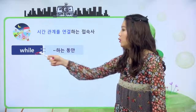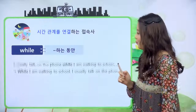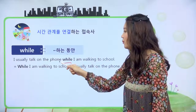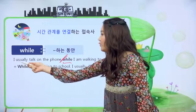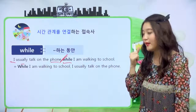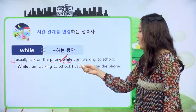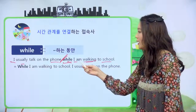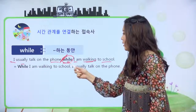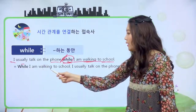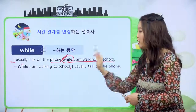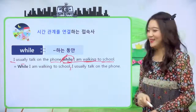몇 가지 더 볼게요. while은 뭐뭐 하는 동안 이라고 해석이 돼요. 예문 보면 I usually talk on the phone while I'm walking to school. 나는 보통 학교에 걸어가는 동안 통화를 한다라는 거예요. 순서를 바꾸면 While I'm walking to school, I usually talk on the phone 하게 되면 같은 문장이 됩니다. 순서가 바뀔 때는 가운데 콤마가 와야 된다.